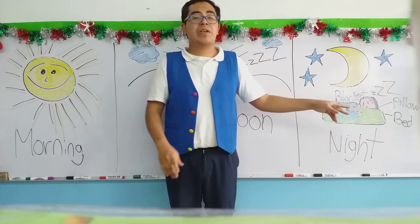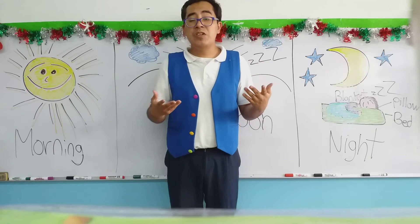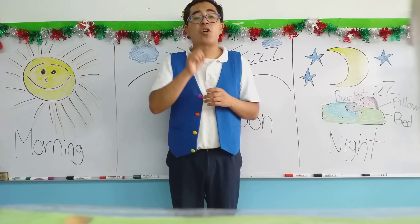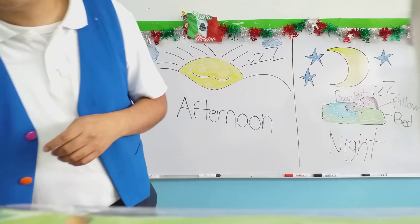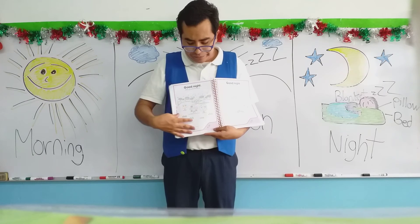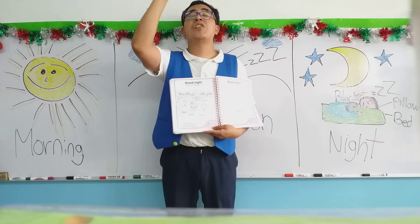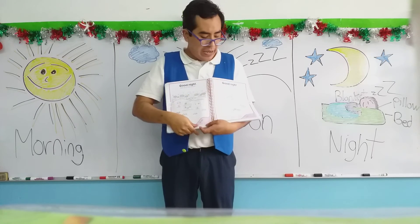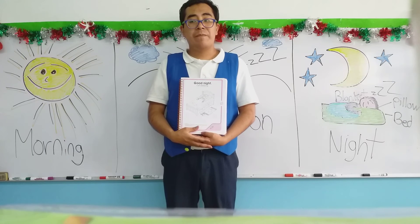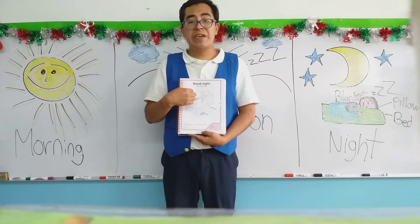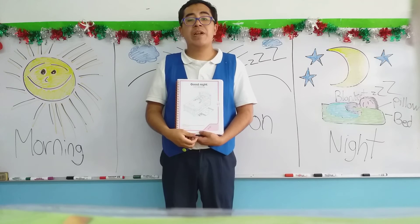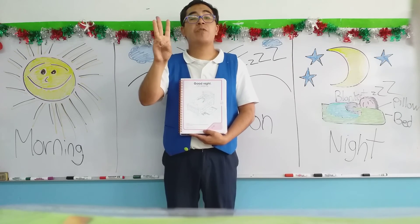Before we finish the video, I'm going to explain the activities of the day. Remember, they are part of your textbook, located right here on these two pages. As you can see, we have good night — when the moon comes out. And then we have sleeping; sleeping in Spanish: durmiendo. And the objects for sleeping: the bed, blanket, and pillow. Recuerden los objetos que utilizamos para dormir: almohadas, cobijas, y nuestra cama.